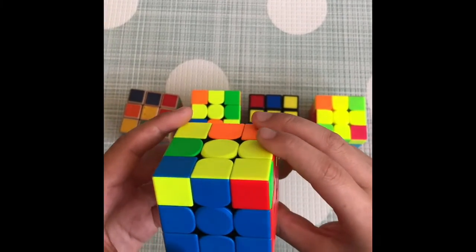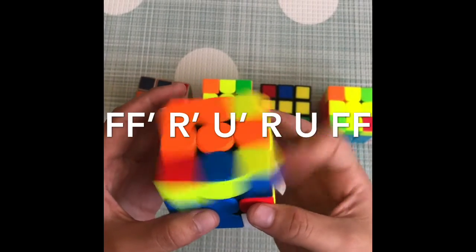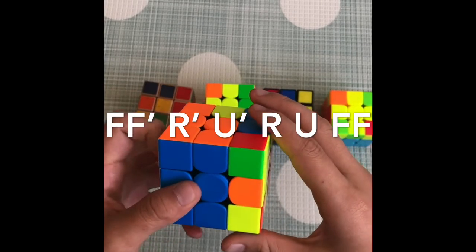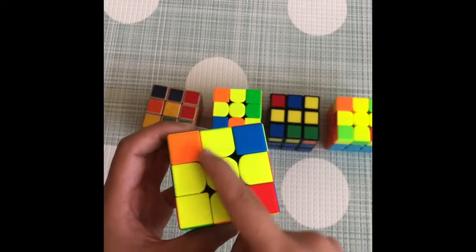That basically gets you to the cross. So now if you have the line here, if you have this line, then do the same algorithm that you did for the cube with the only one yellow center.